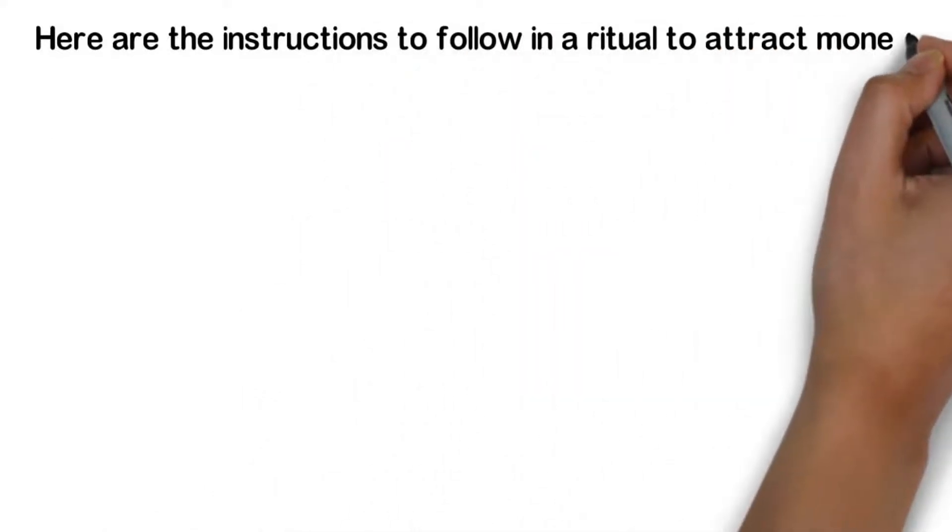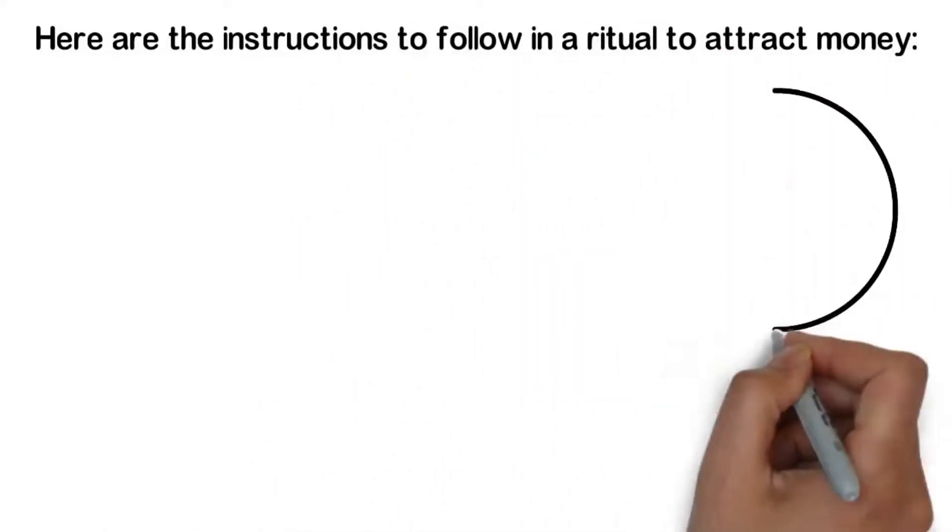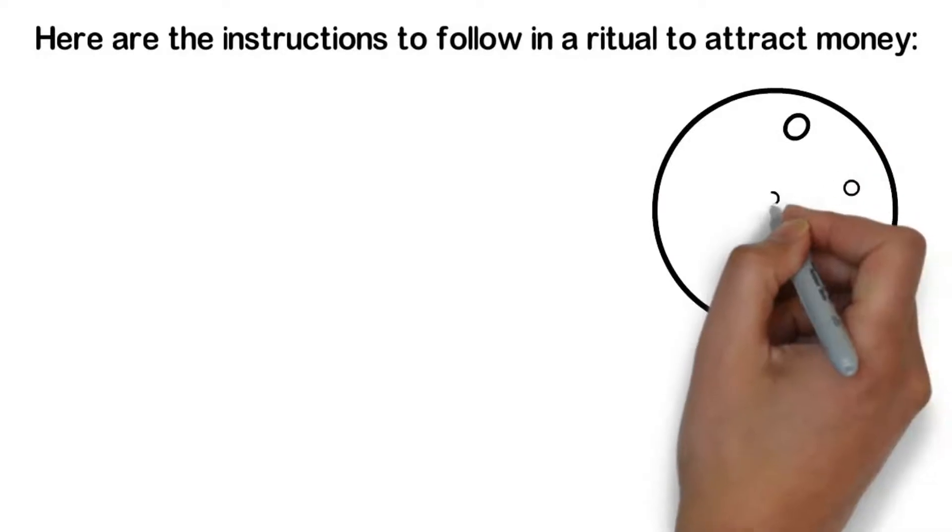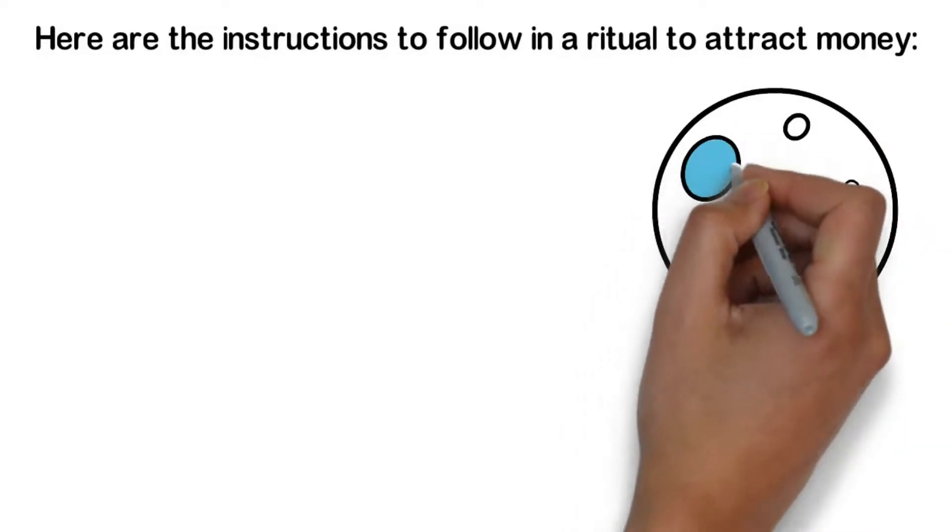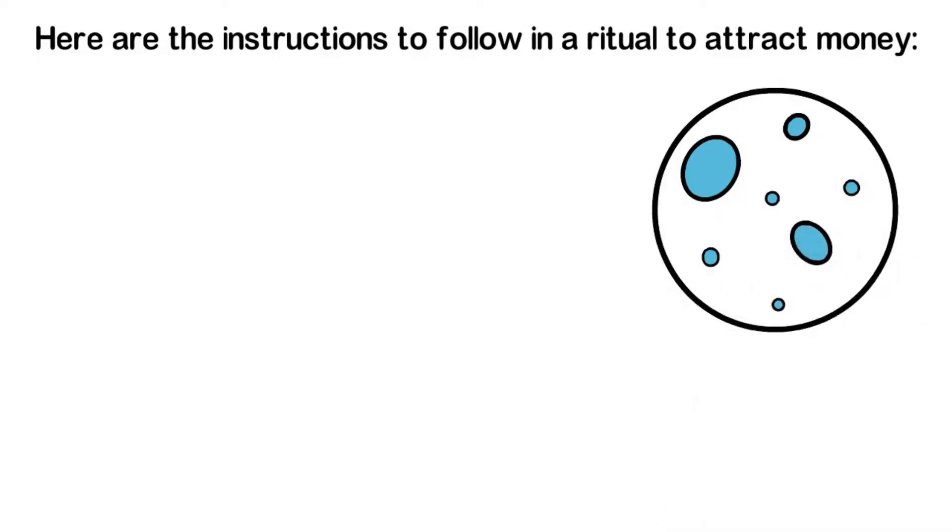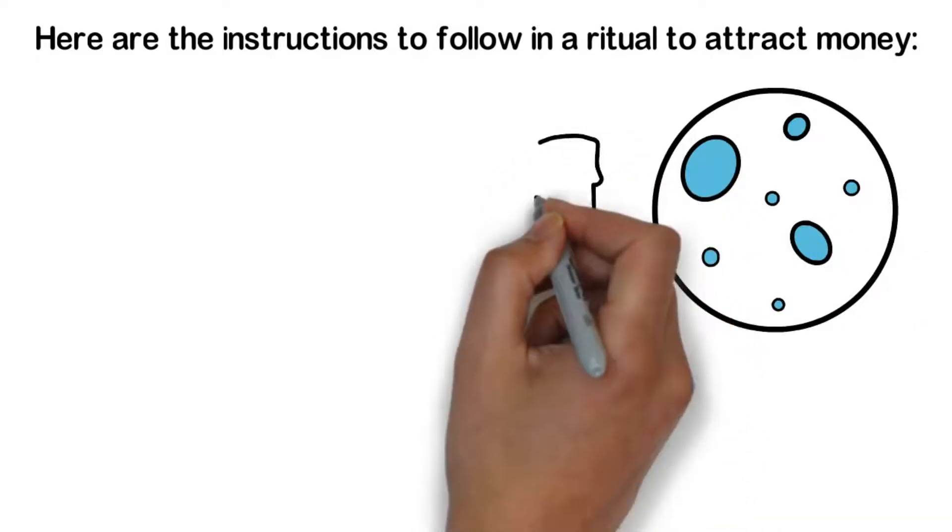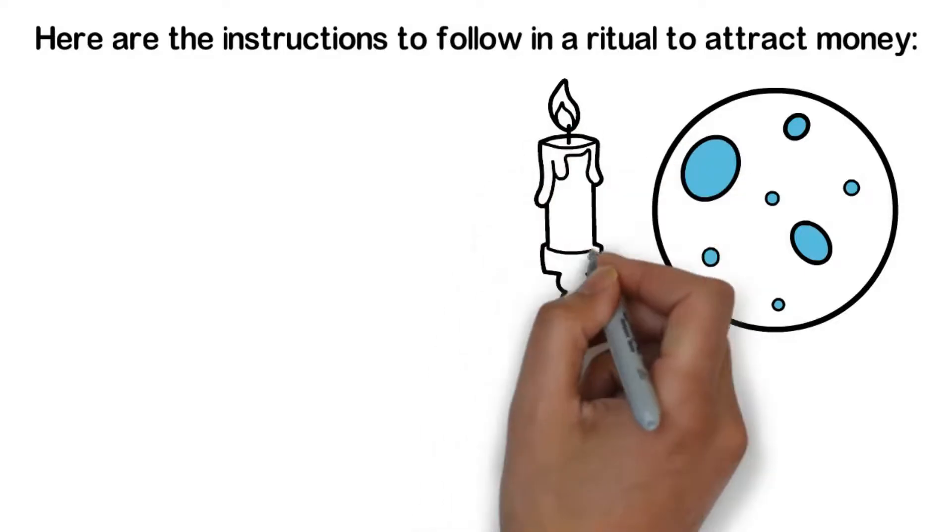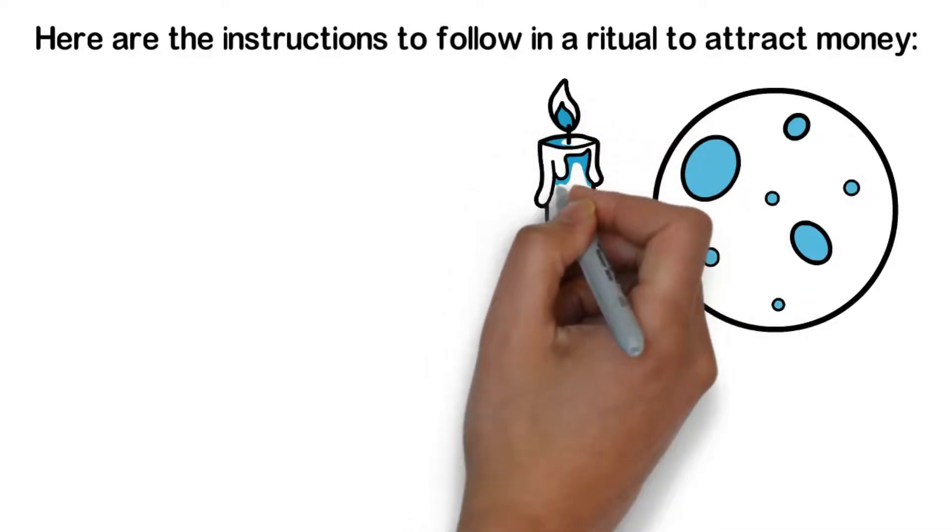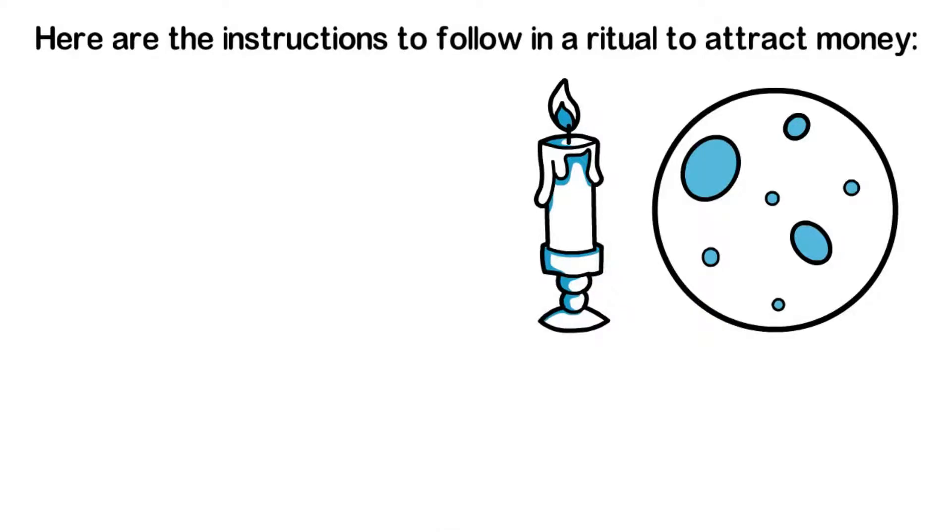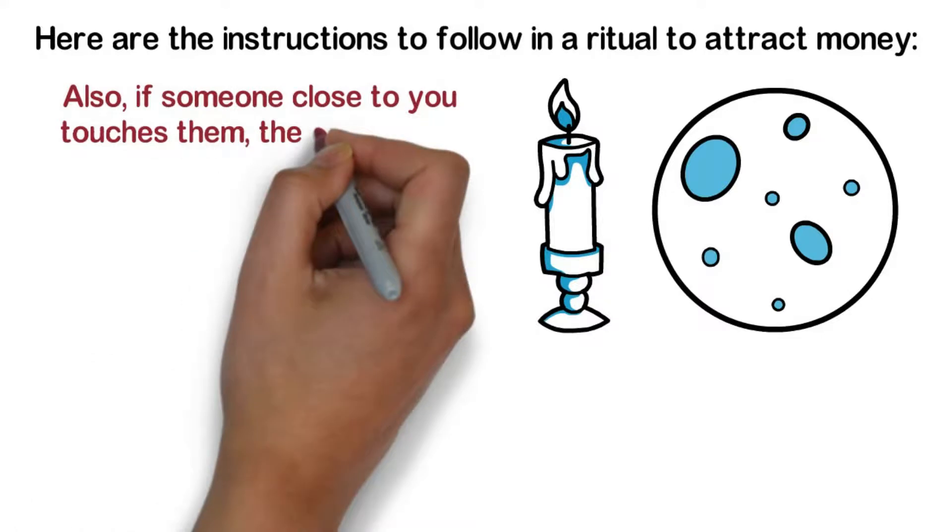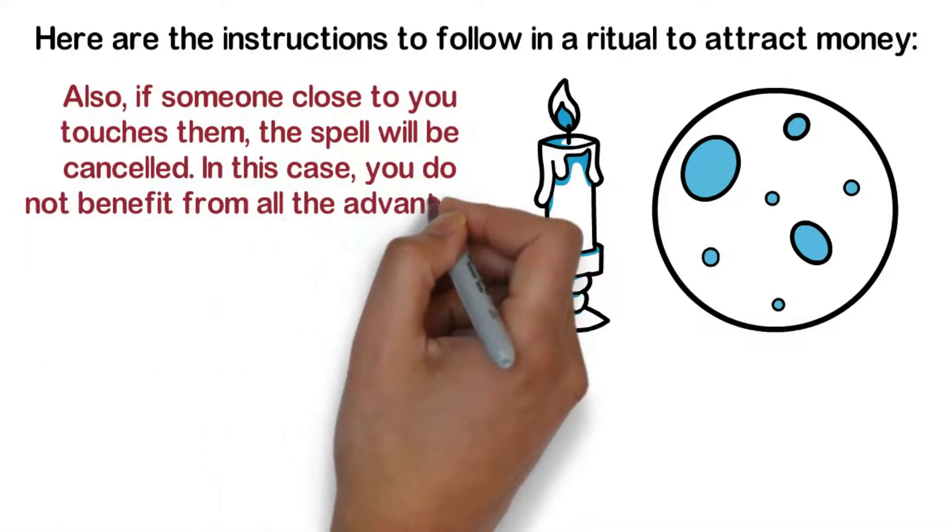Here are the instructions to follow in a ritual to attract money. You start the ritual three days before the full moon. The first thing to do is to rub the candle with the cloves for a few seconds, then put it in the candle holder. After you have done that, put it in the magnetized saucer with the cloves next to it. Finally, put the envelope and the banknote under the saucer. You must not touch the supports while waiting for the full moon.